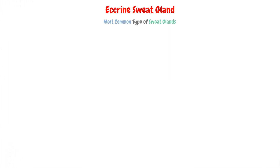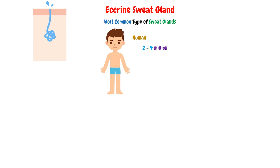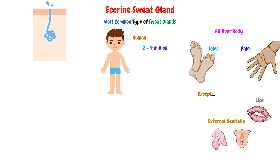The Eccrine sweat gland is the most common type of sweat glands, and the human body has about 2 to 4 million of them. This type of gland is found all over the body, especially on the thick skin of the palm of the hand and the soles of the feet, while we won't see this type of gland in the lips and in the external genitalia.